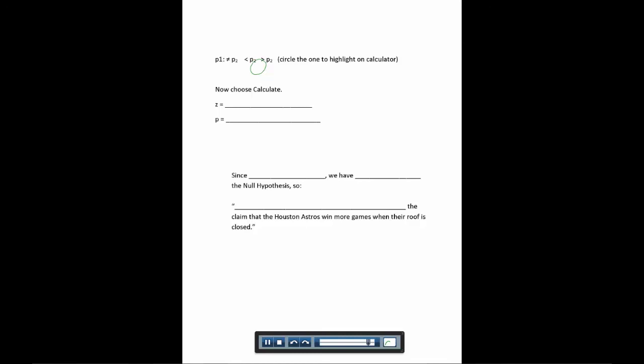Now the Z value it gives us is negative 0.89, and the P value it gives us is 0.186. Now remember we said let alpha be 0.05, so our P is bigger than alpha, which means we do not reject the null hypothesis. And when we do not reject the null hypothesis, we can't support the alternate.